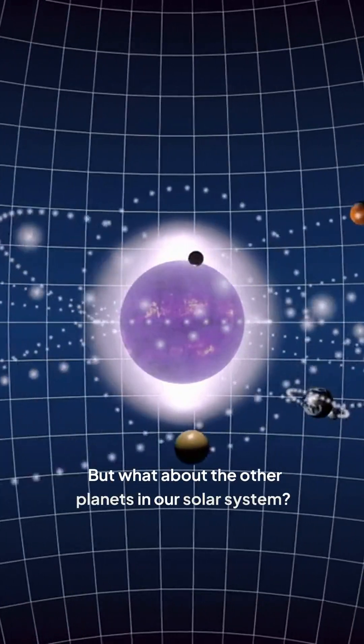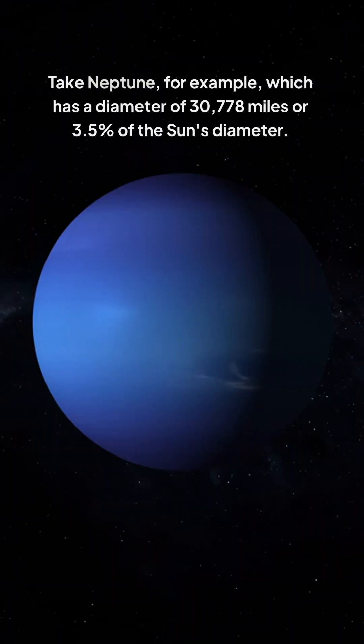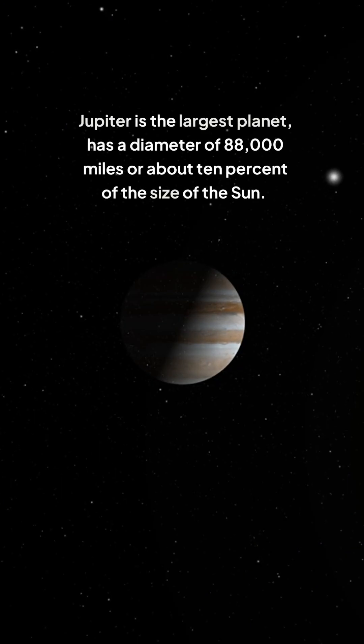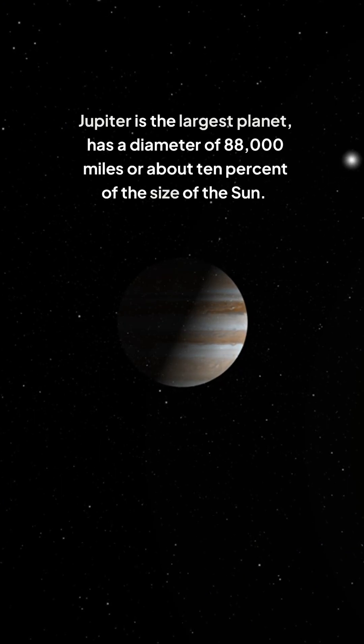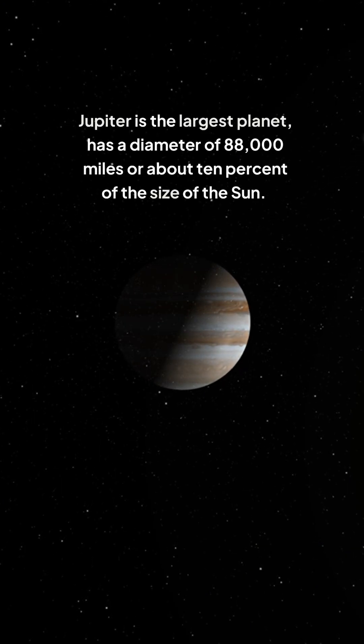But what about the other planets in our solar system? Take Neptune, for example, which has a diameter of 30,778 miles, or 3.5% of the sun's diameter. Jupiter, the largest planet, has a diameter of 88,000 miles or about 10% of the size of the sun.